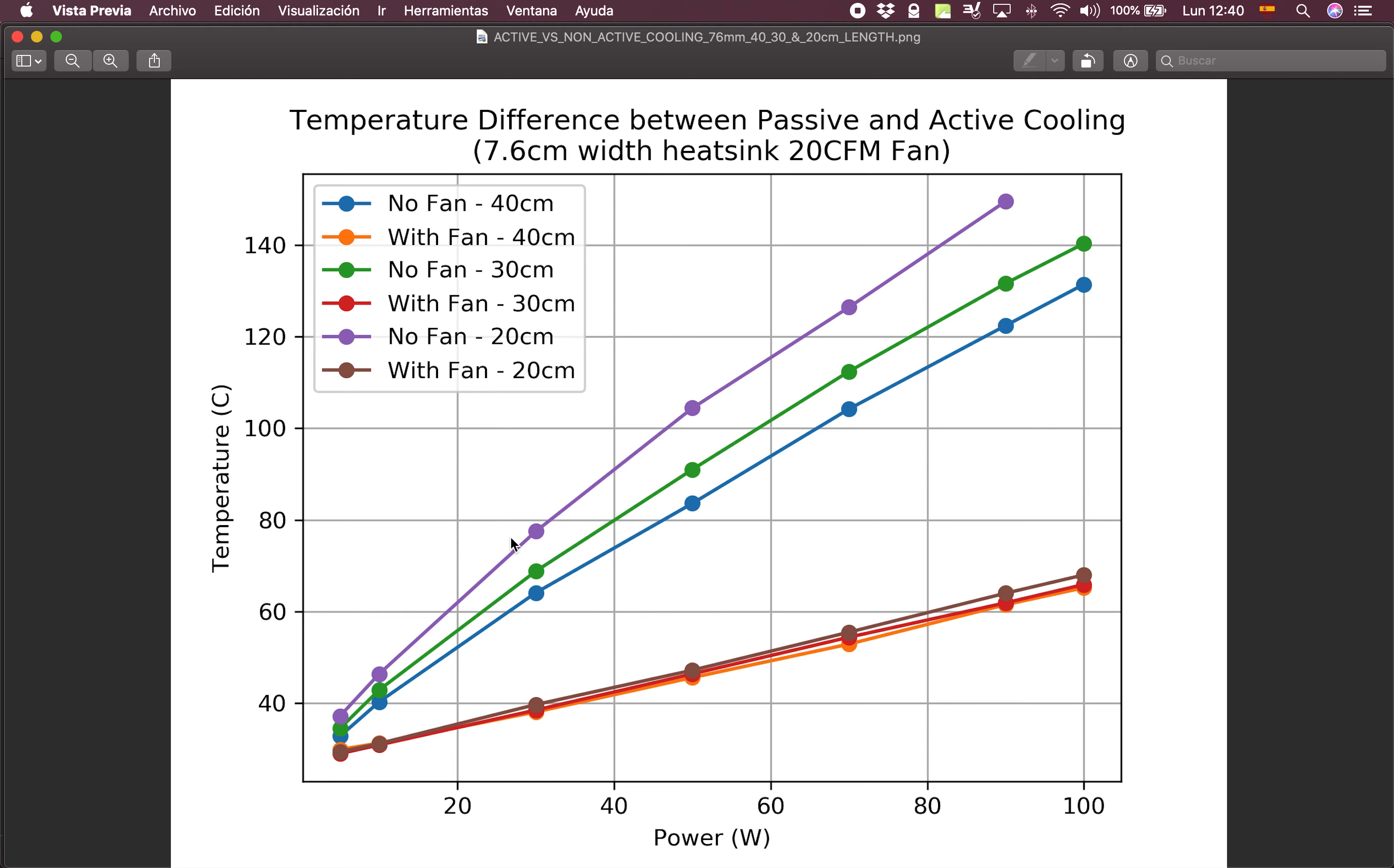The purple line shows the behavior of the temperature of the heatsink while on passive dissipation for the 20 cm length.